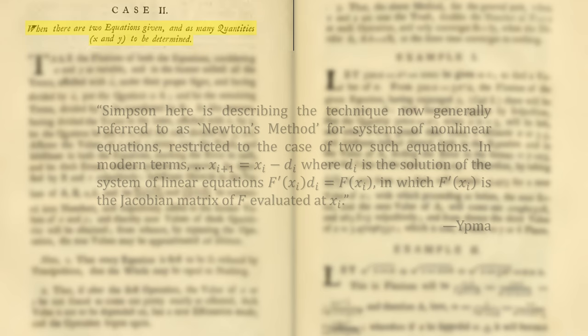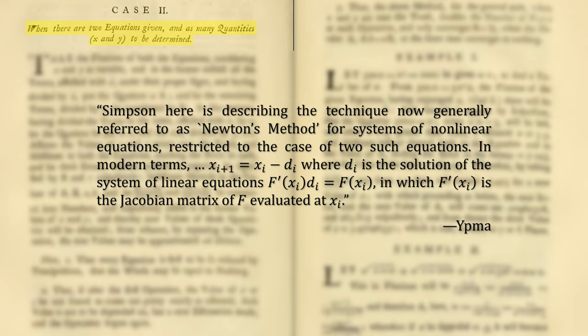Ypma writes, Simpson here is describing the technique now generally referred to as Newton's method for systems of nonlinear equations restricted to the case of two such equations. In modern terms, x sub i plus 1 is equal to x sub i minus d sub i, where d is the solution of the system of linear equations, this equation, in which F prime is the Jacobian matrix of F evaluated at x sub i.